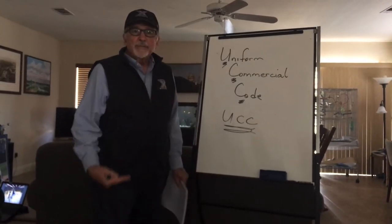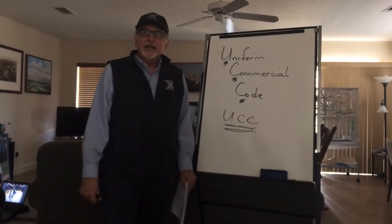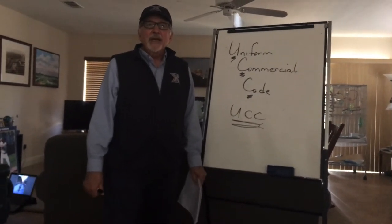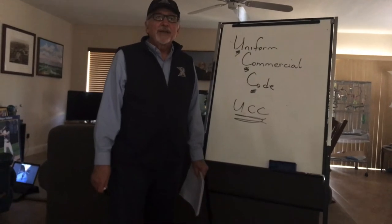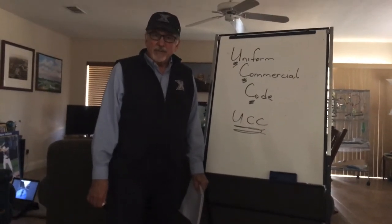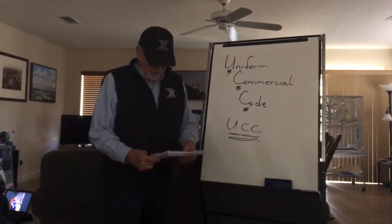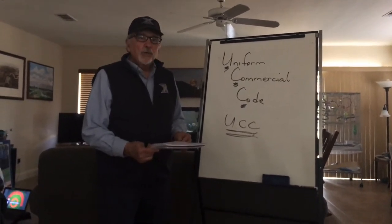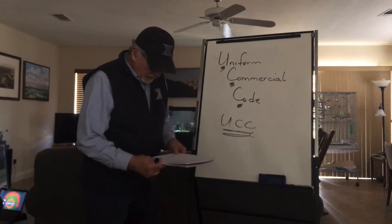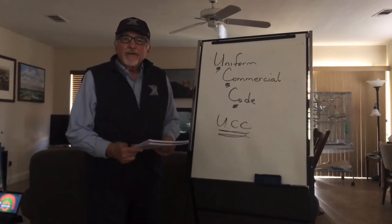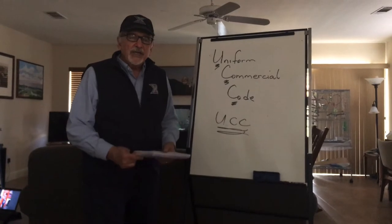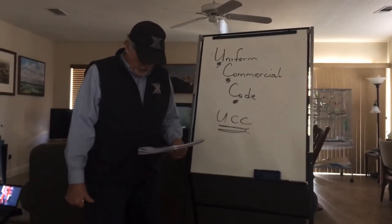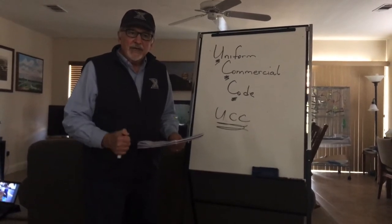The Uniform Commercial Code has been adopted in all states. And even though it says it's uniform, it is generally speaking a little bit different in every state, so you need to pay attention to the Uniform Commercial Code in your state. Article 2 refers to the sale of goods in the Uniform Commercial Code. It's the sale of goods — not services, not real property or real estate.